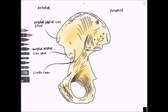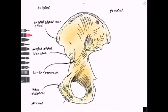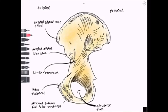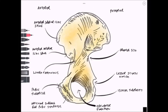We can see the linea terminalis here — a ridge which forms the pelvic brim and separates the true and false pelvis. We can see the pubic tubercle once more, and on this view we can also see the anterior surface of the pubic symphysis, which is a midline cartilaginous joint. The obturator foramen can be seen again, filled by the obturator internus and externus muscles. We see the ischial tuberosity, which is important for where weight is placed when we're sitting. We can see the lesser sciatic notch and the greater sciatic notch once more with the ischial spine in the centre.